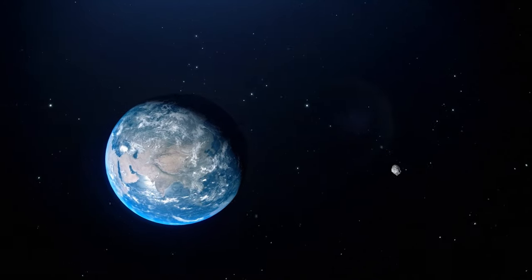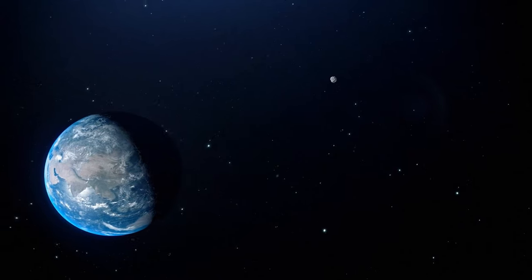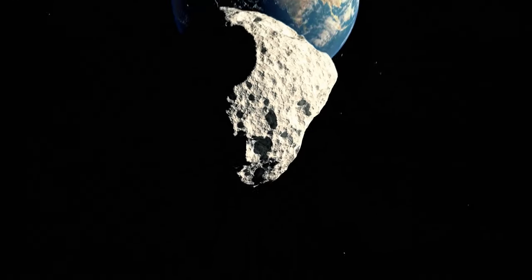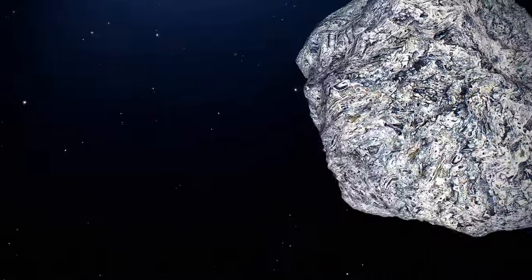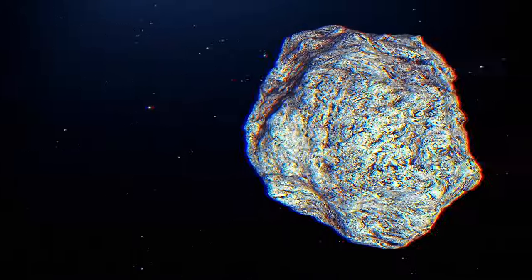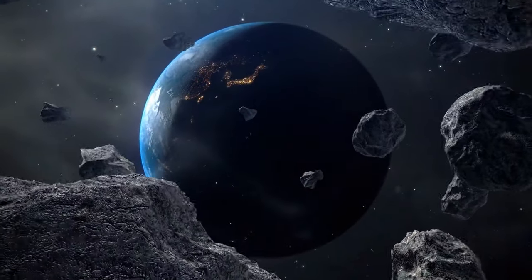It didn't stay with Earth for long, though. The asteroid followed a random orbit and slowly drifted away. Temporarily captured objects such as 2020 CD3 are rare. They need to have a specific direction and speed to be caught by Earth's gravitational pull. Otherwise, they either crash into the planet or fly in another direction.